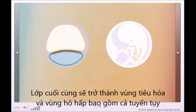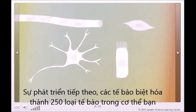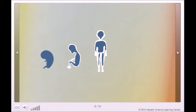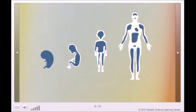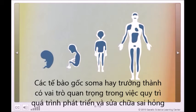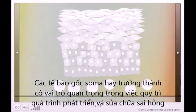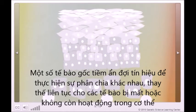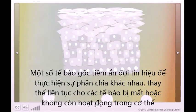The endoderm includes the pancreas and the liver. As development continues, cells differentiate to form the 250 or so cell types of the body. But even after birth and into adulthood, pockets of stem cells remain. These somatic, or adult, stem cells play an important role in growth, maintenance, and repair. Some stem cells sit quietly, waiting for a signal to tell them to divide; others are constantly at work replacing cells lost through daily wear and tear.